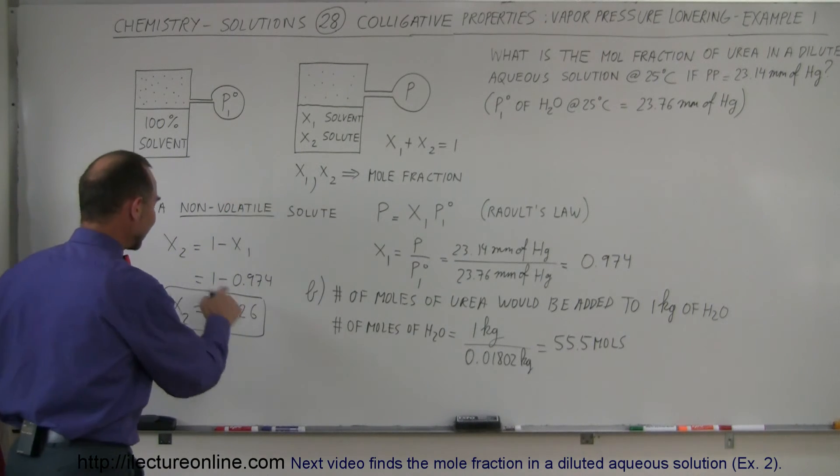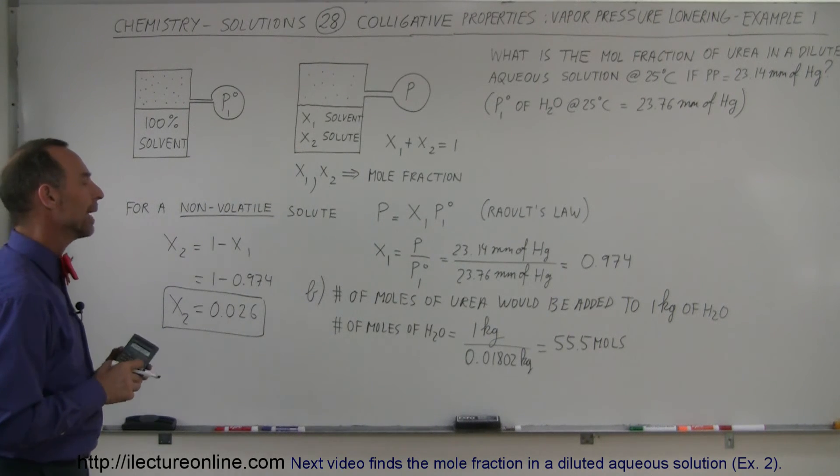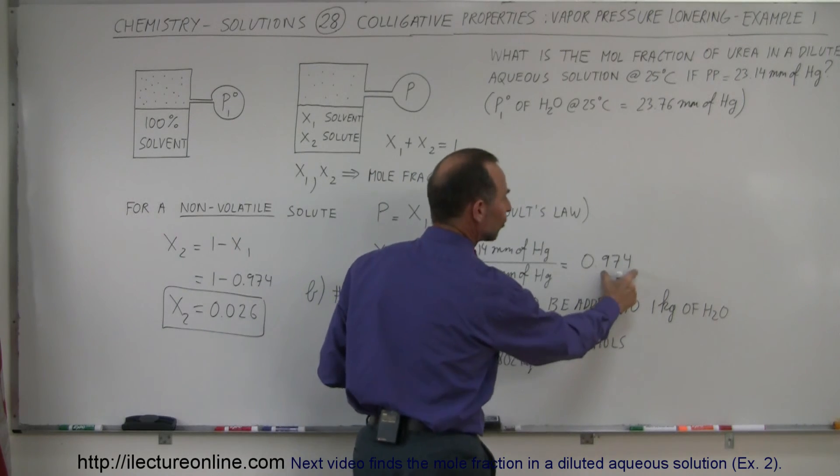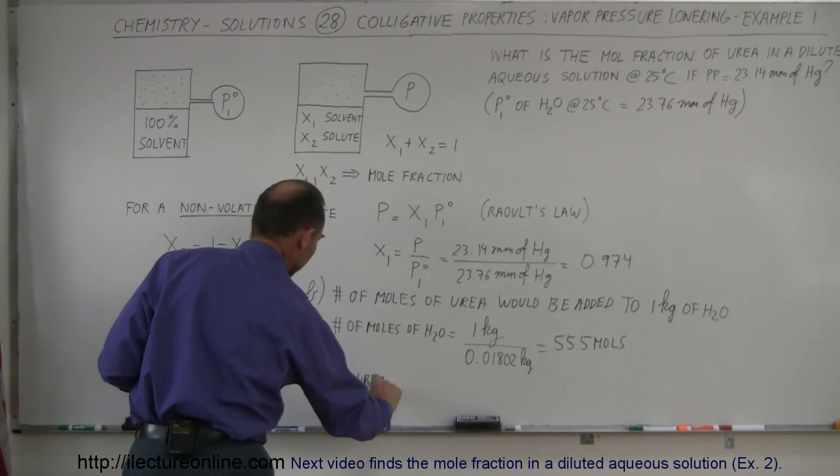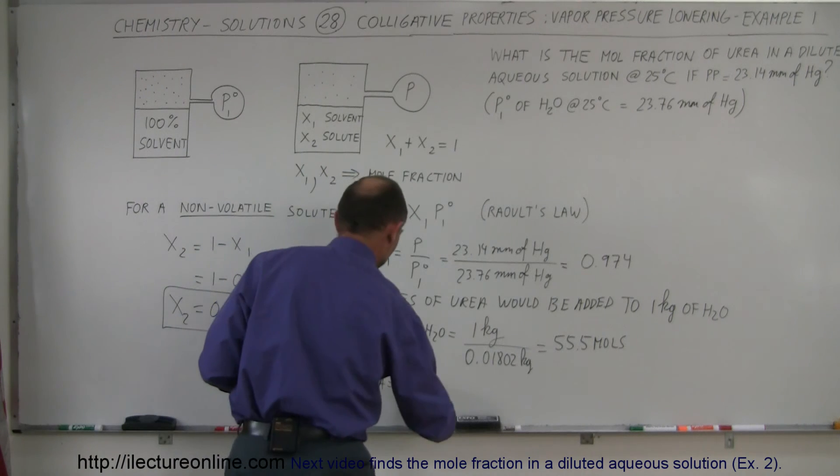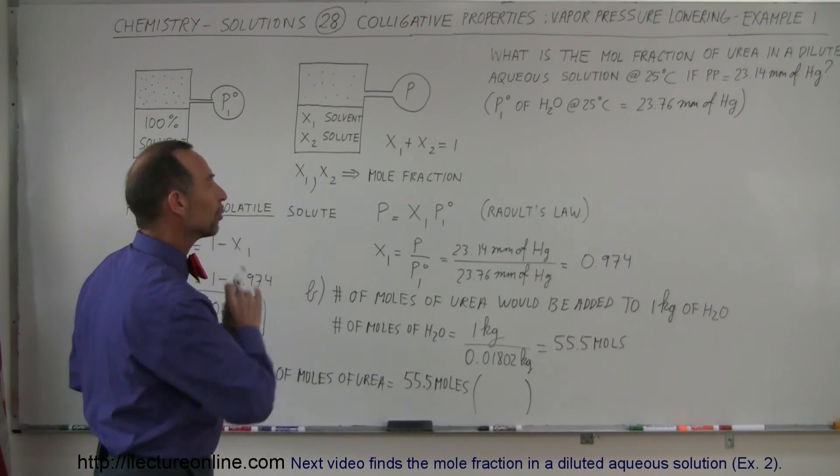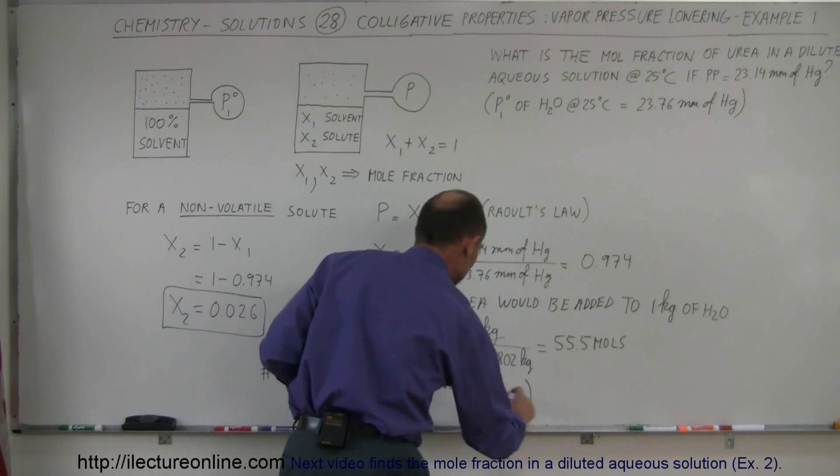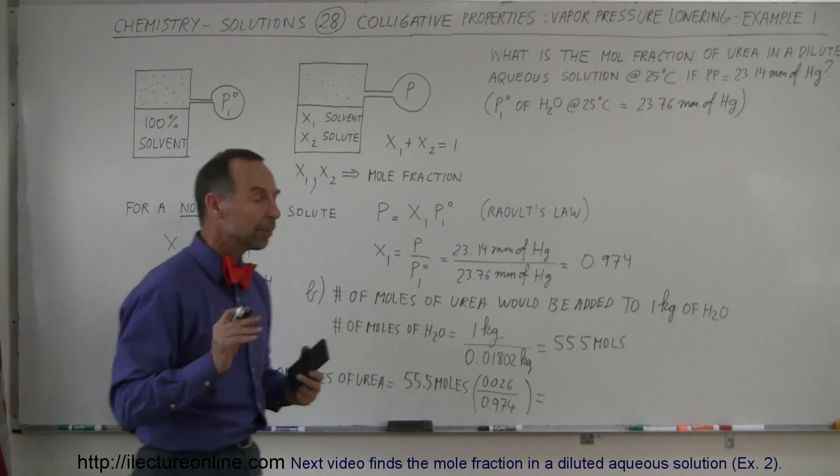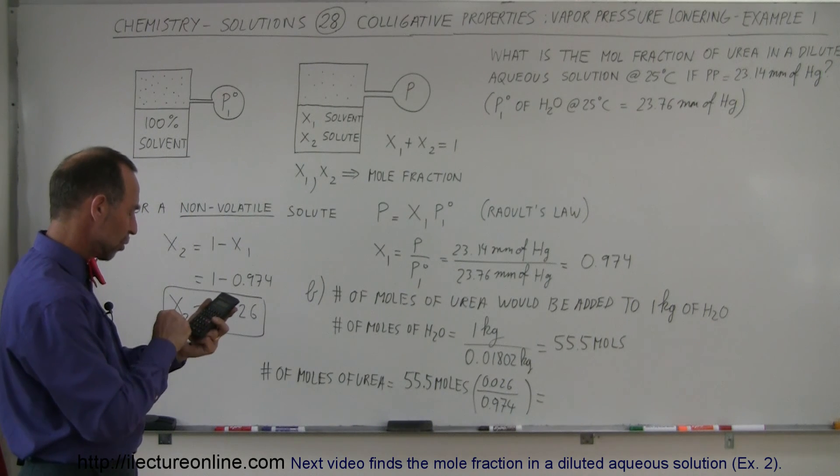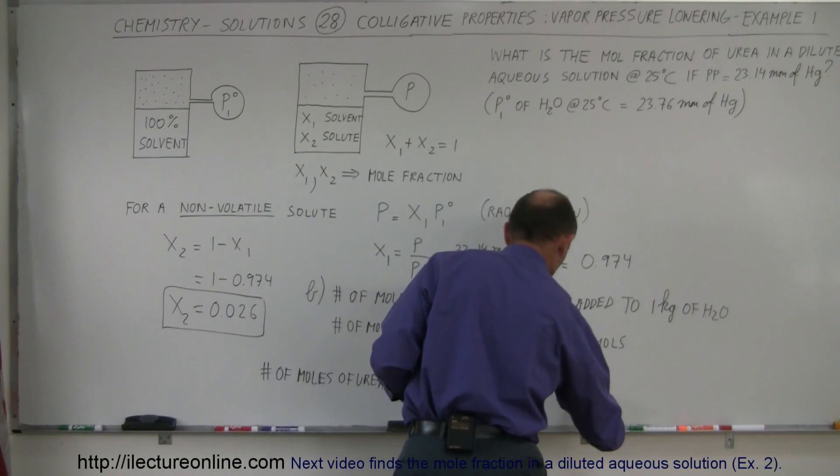55.5 moles of water. So how many moles at this ratio does that represent for urea? If that's how many moles of water we have, and that many moles represent this mole fraction, then how much does this represent? So it's going to be a ratio of the two. So the number of moles of urea is going to be the 55.5 moles times the ratio of what the fraction of urea is compared to the fraction of water. So that would be equal to 0.026 divided by 0.974. And that will give us the right number of moles for urea, so 55.5 times 0.026 divided by 0.974 equals, that gives us 1.48 moles.